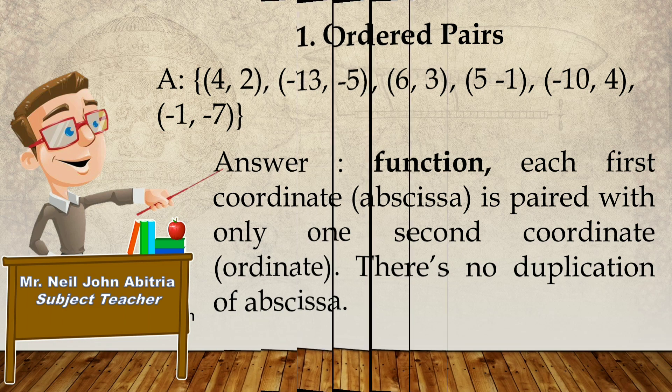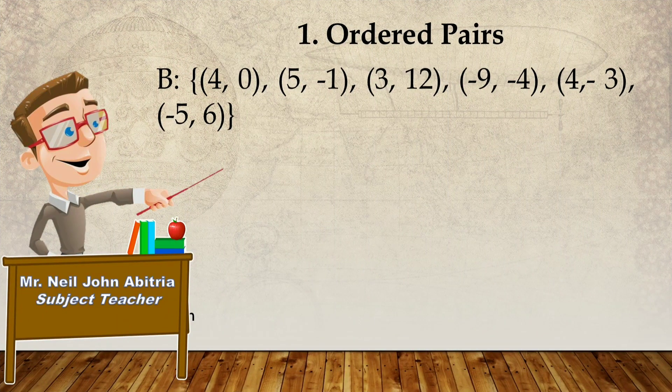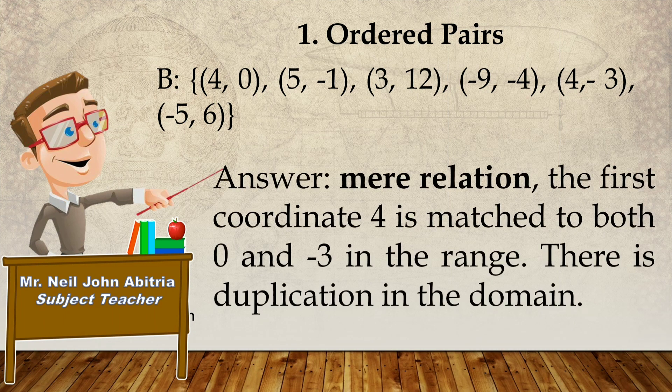So, letter B. Do you think, is it a mere relation or a function? Very good. The correct answer is mere relation. Because the first coordinate 4 is matched to both 0 and negative 3 in the range. There is duplication in the domain.